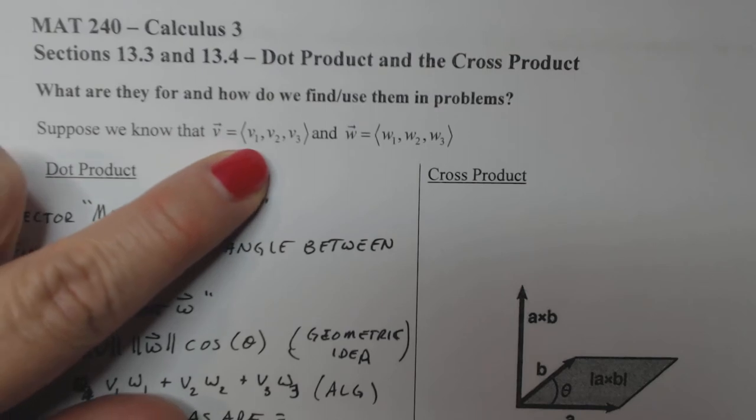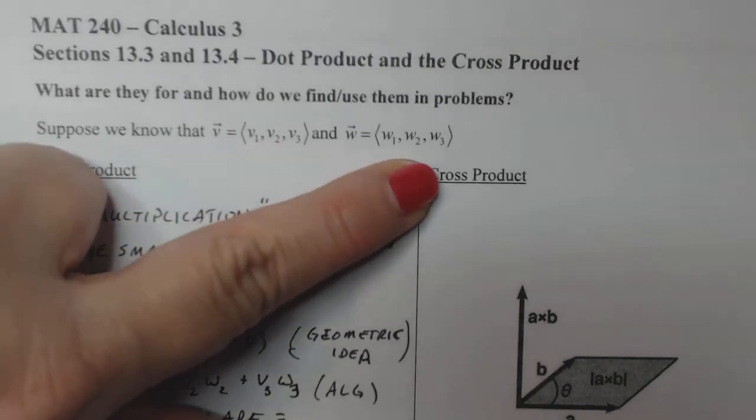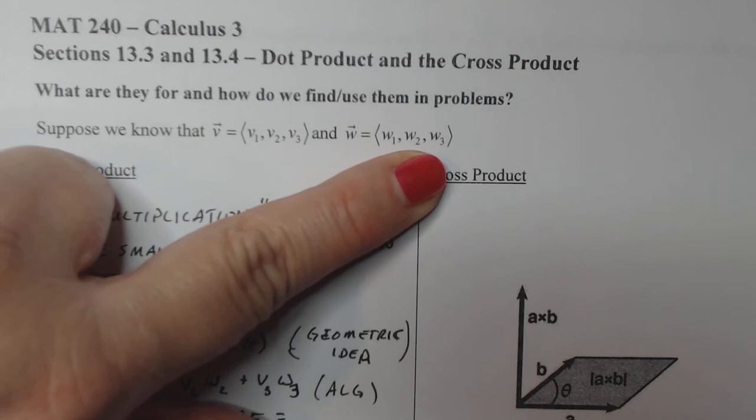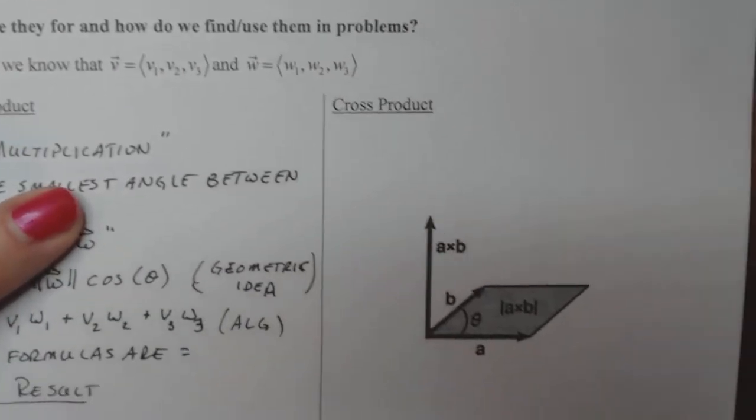So again, we have this premise that V is this vector V1, V2, V3, and W is this vector W1, W2, W3, I, J, K.